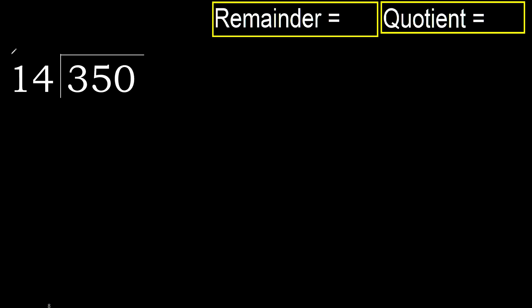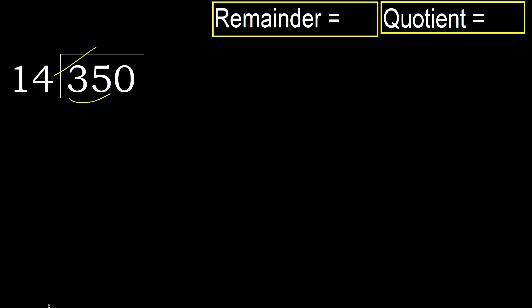350 divided by 14. 3 is less, therefore next. 35 is not less, therefore work with 35. 14 multiplied by which number is nearest to 35?